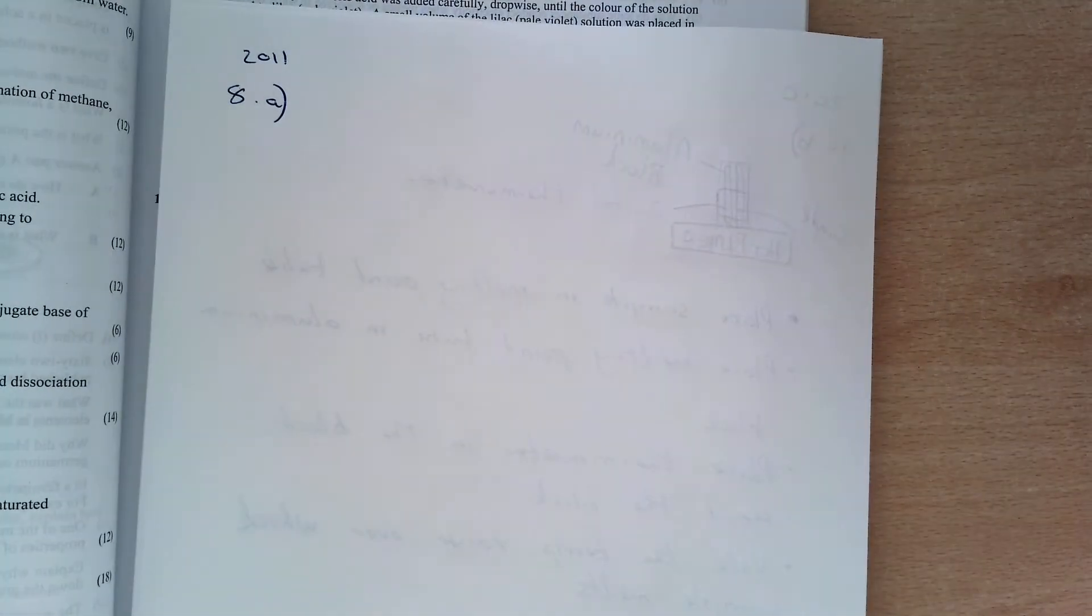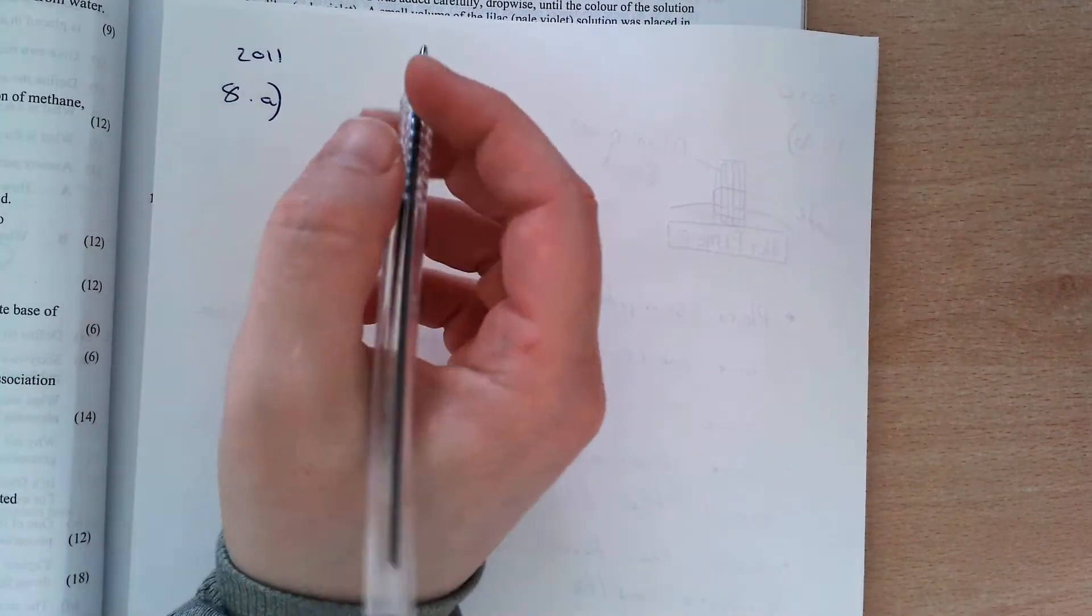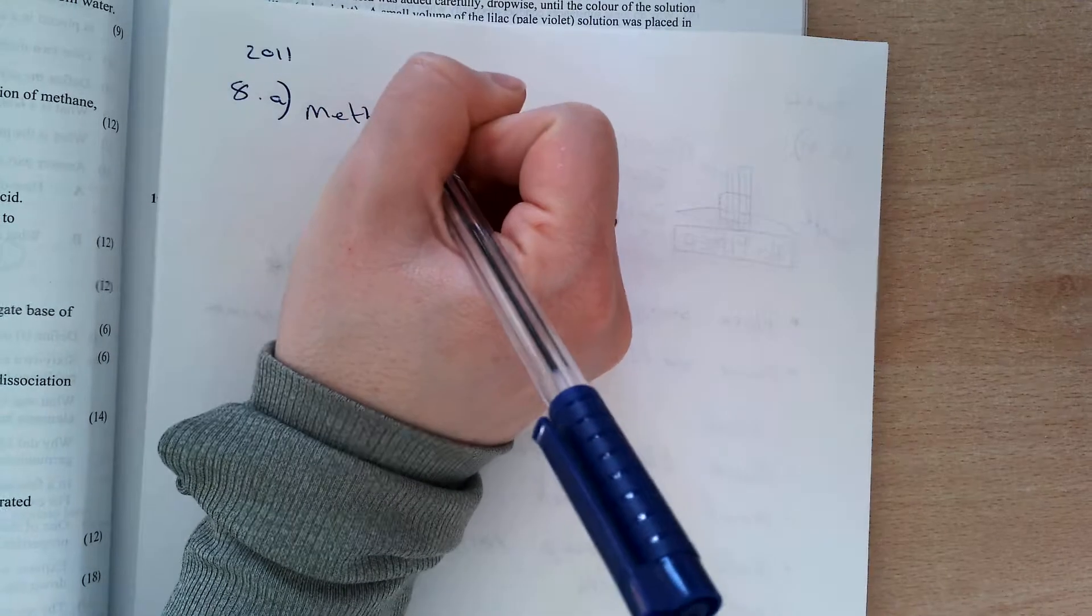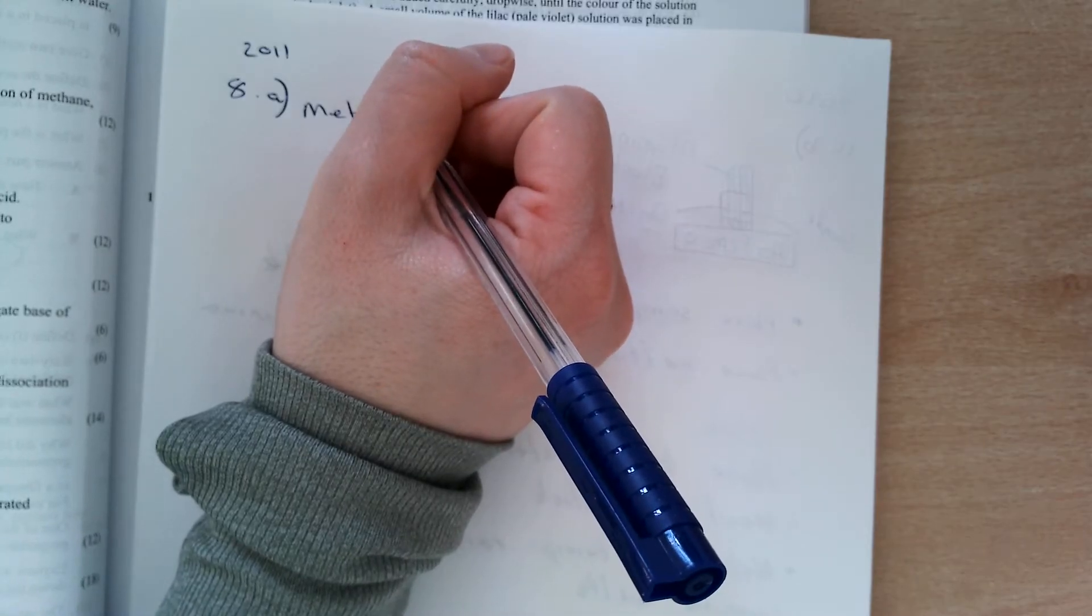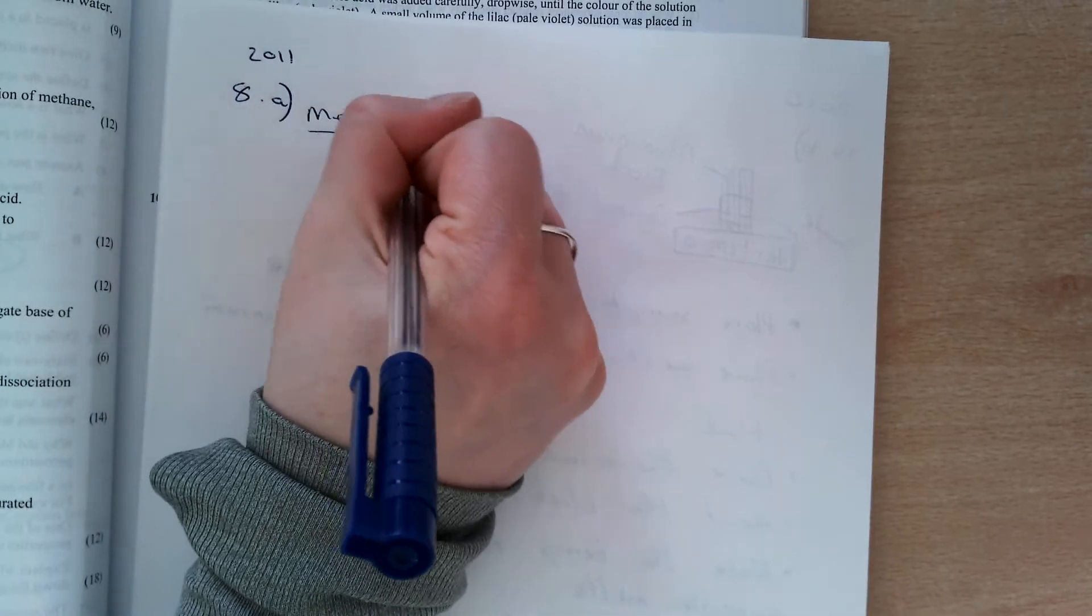Okay, so my next question is for 2011, question 8A. You're asked to answer the questions below about methane, ethane, and benzene, and you're asked to describe the mechanism of the monochlorination of methane.